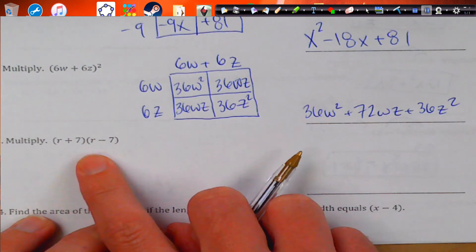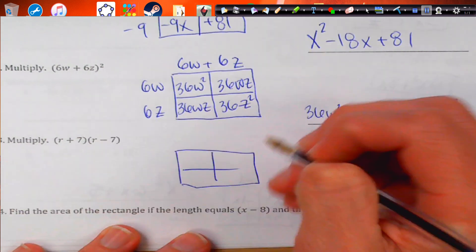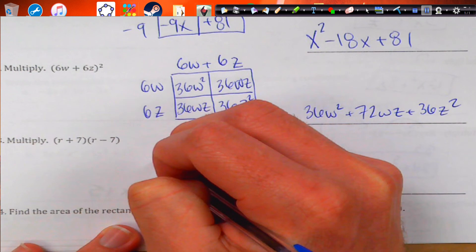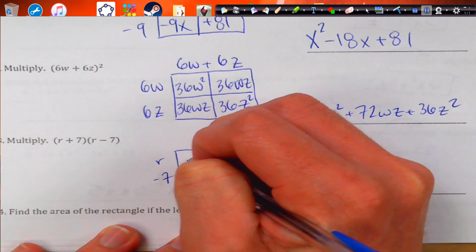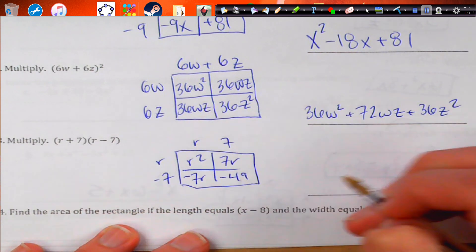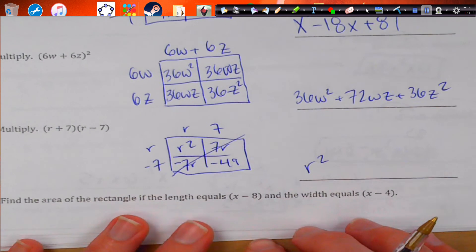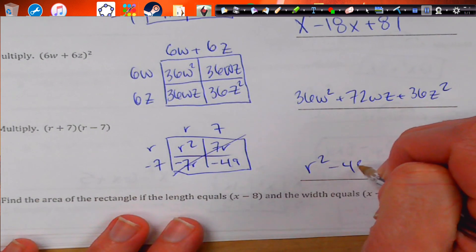This one here, again, box method. You haven't got tired of that yet. So, we're going to get r squared. But the middle term is going to cancel out. 7 minus 7 is 0. And we get negative 49.